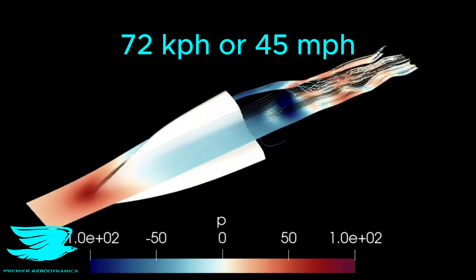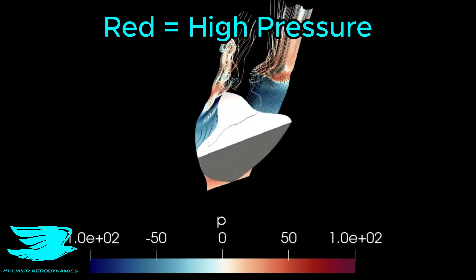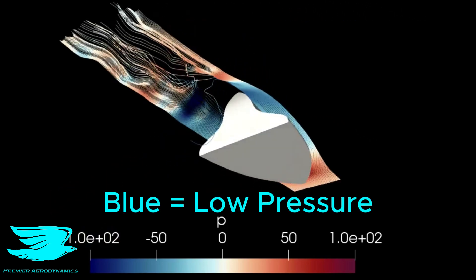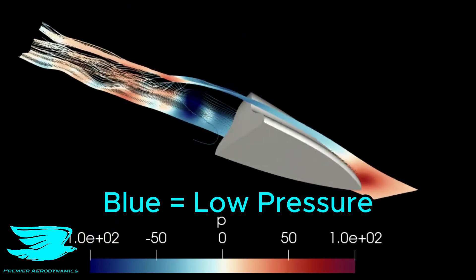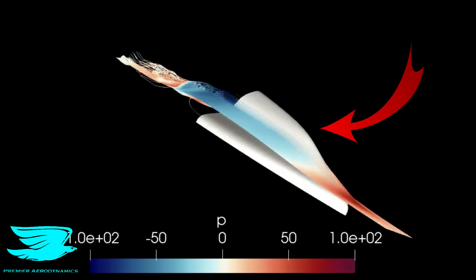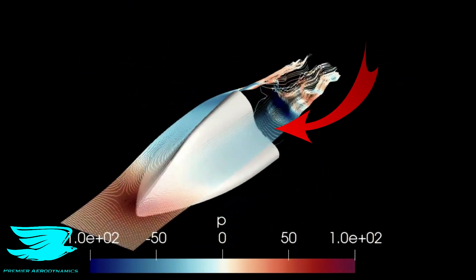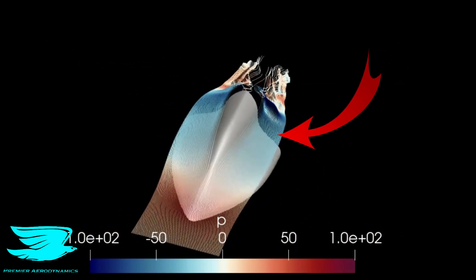The flow is 20 meters per second, and the streamlines are coloured by pressure, with red being high pressure and blue being low pressure. It's quite amazing how much the pressure drops going over the antenna, which is mainly due to the antenna's curvature.